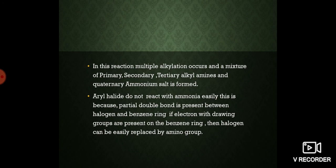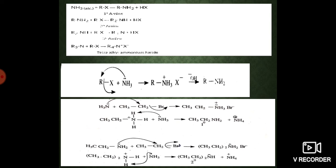If electron-withdrawing groups are present in the benzene ring, halogen can be easily replaced by the amino group. In the reaction mechanism: ammonia reacts with alkyl halide to give the primary amine; primary amine reacts with one mole of alkyl halide to give secondary amine; secondary amine reacts with one mole of alkyl halide to give tertiary amine; and finally, tetraalkyl ammonium halide is formed.